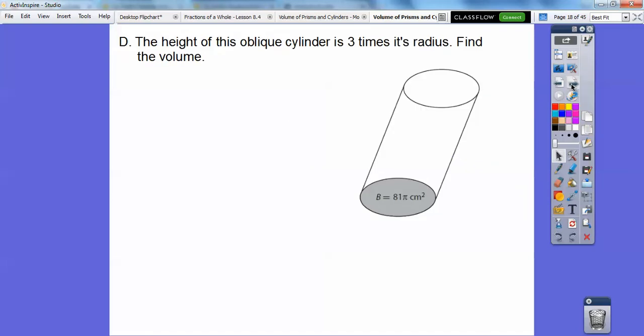So here, now the height of the oblique cylinder is 3 times its radius. Find the volume. So we know the base already, so the volume is base times height. We just got to figure out the height. So let's use this base, which is 81π, and then our area formula of the circle is πr², so I'm getting my radius to be 9. So now the height of the oblique cylinder is 3 times the radius, so the height is going to be 3 times 9, or 27 right there.